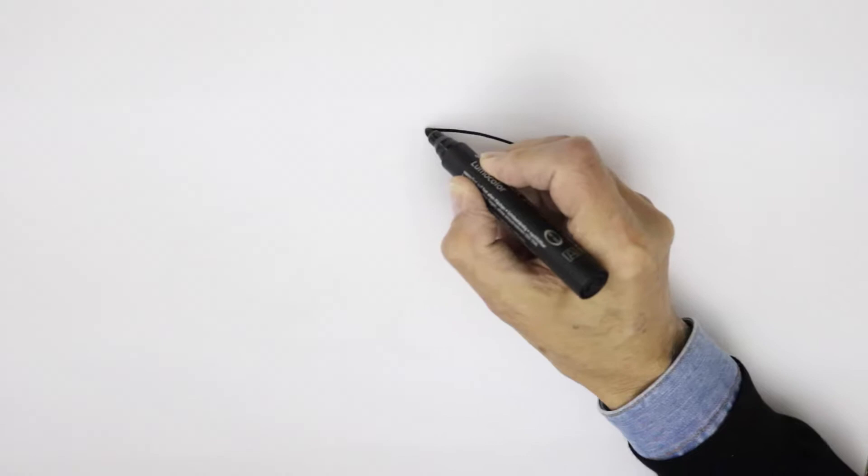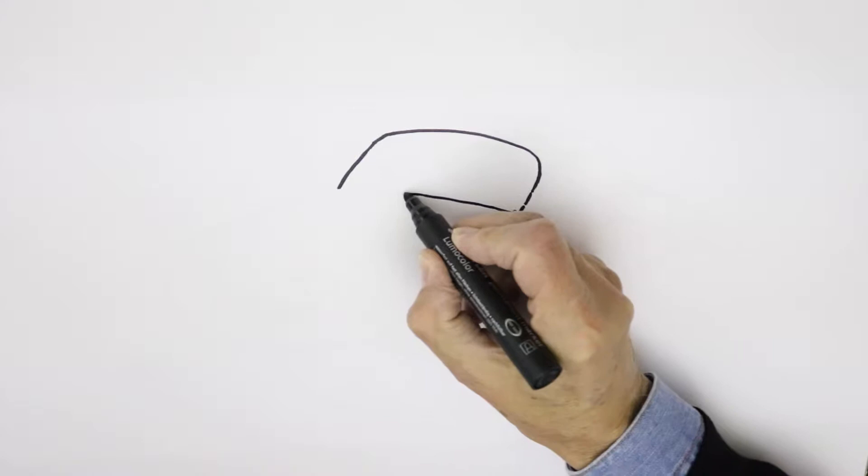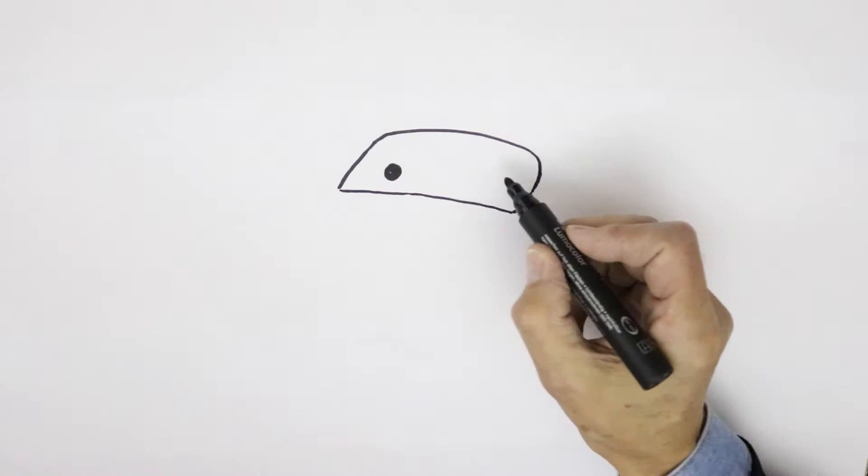So we'll start off with the windscreen coming up with this kind of shape here, right across, a slope there, and then coming back over. There's the windscreen shape.